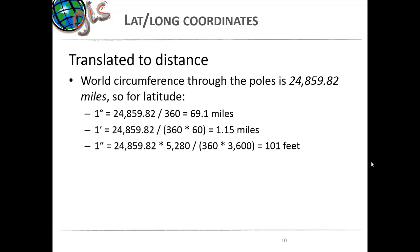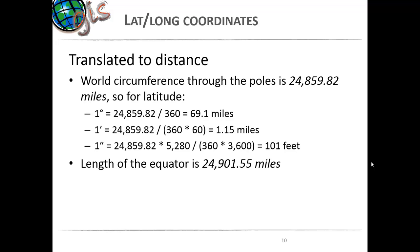Translated to distance, lat-long coordinates are used to translate to distance based on earth's circumference. Through the poles it is 24,859.82 miles. For latitude, 1 degree is 69 miles, 1 minute is 1.15 miles, and 1 second is 101 feet. The length of the equator is 24,901.55 miles.